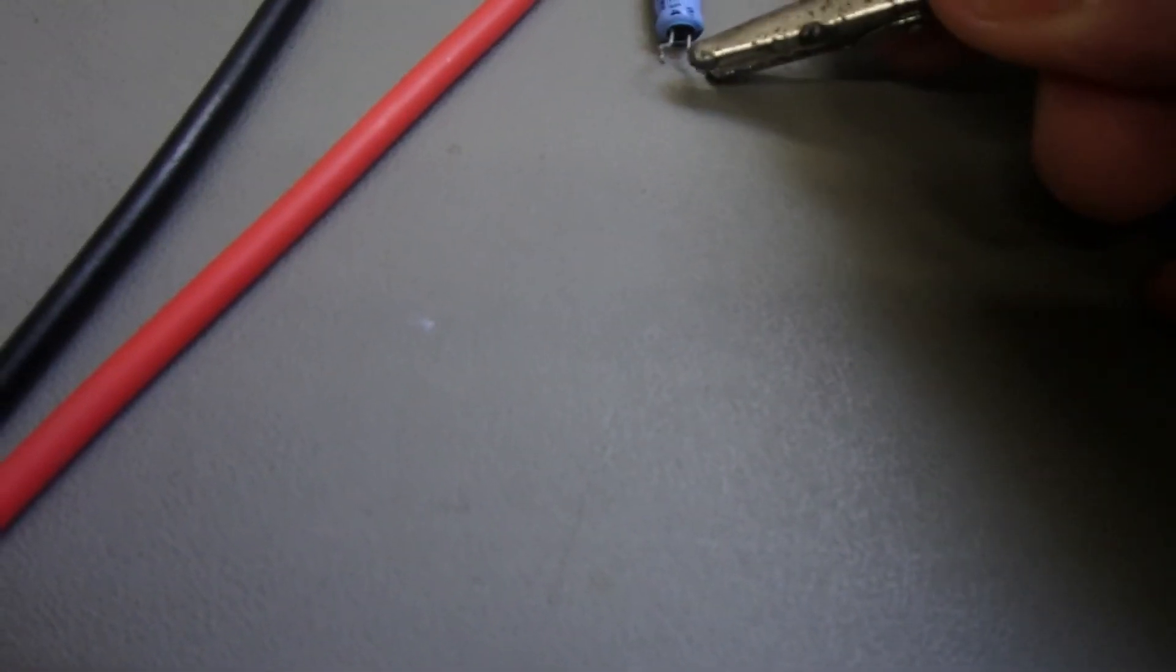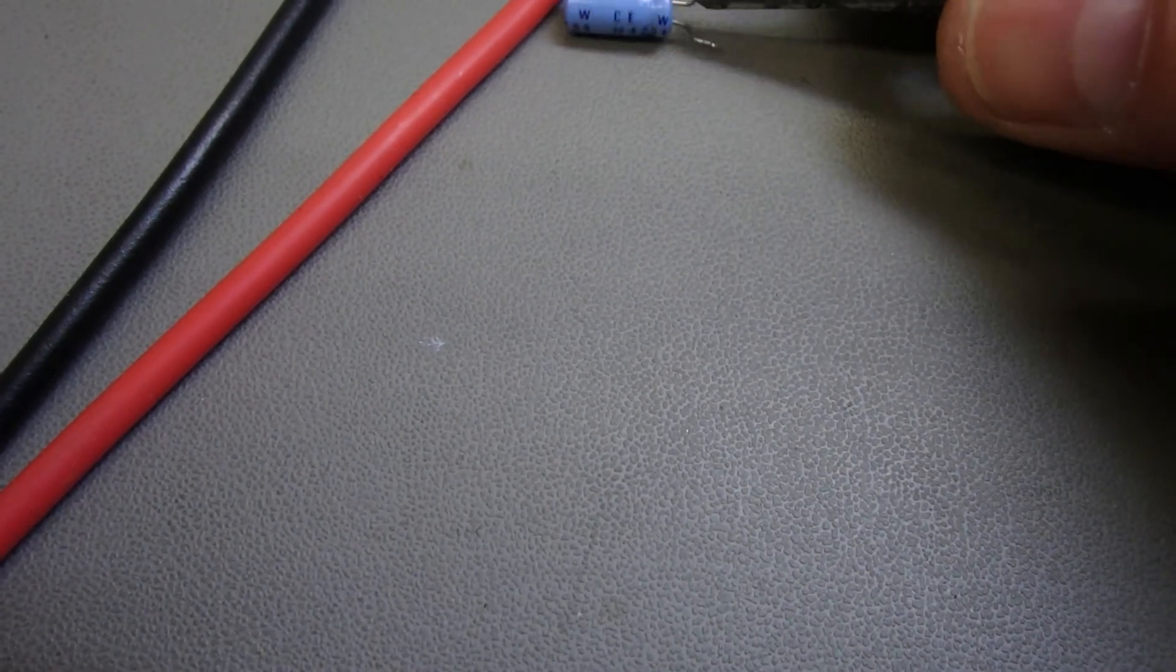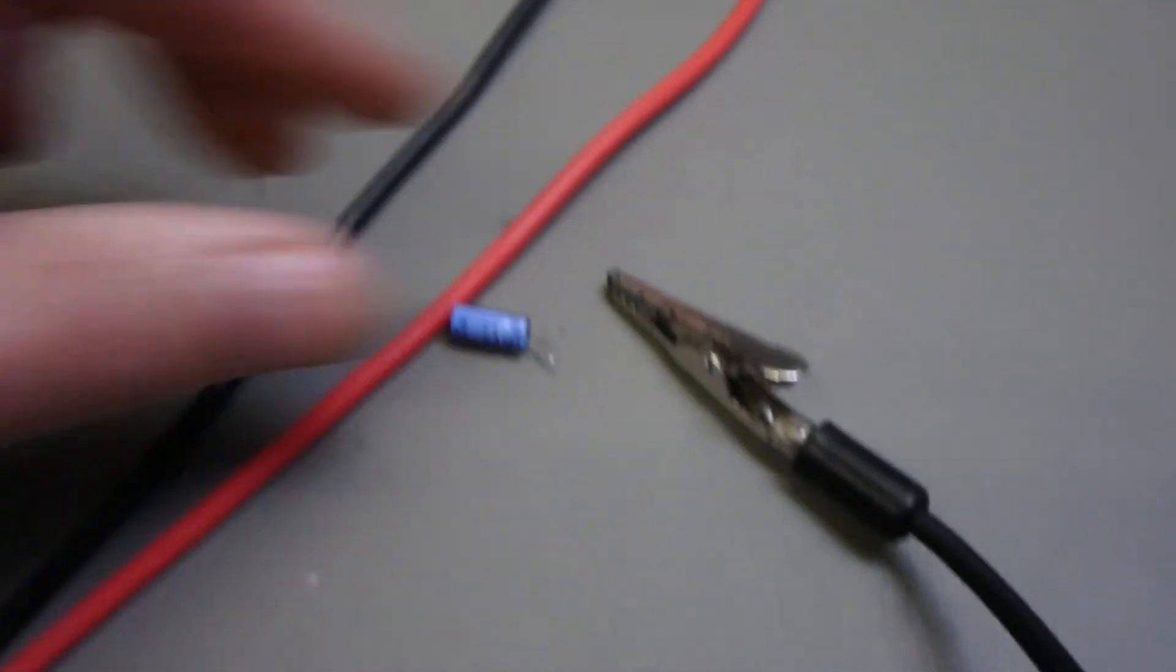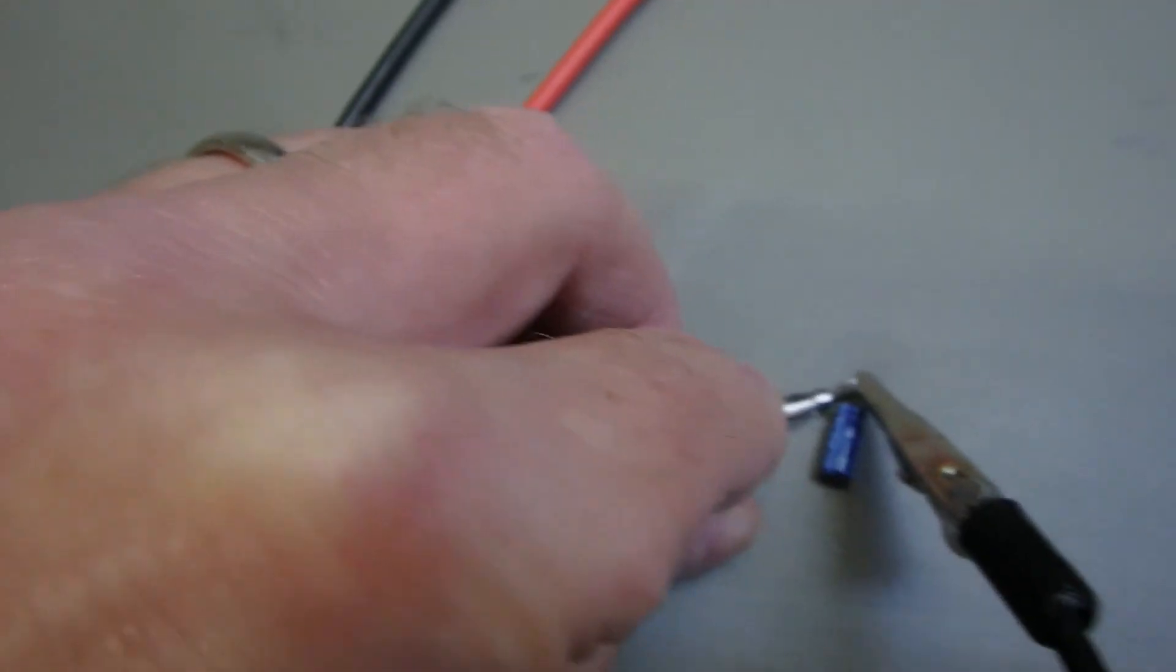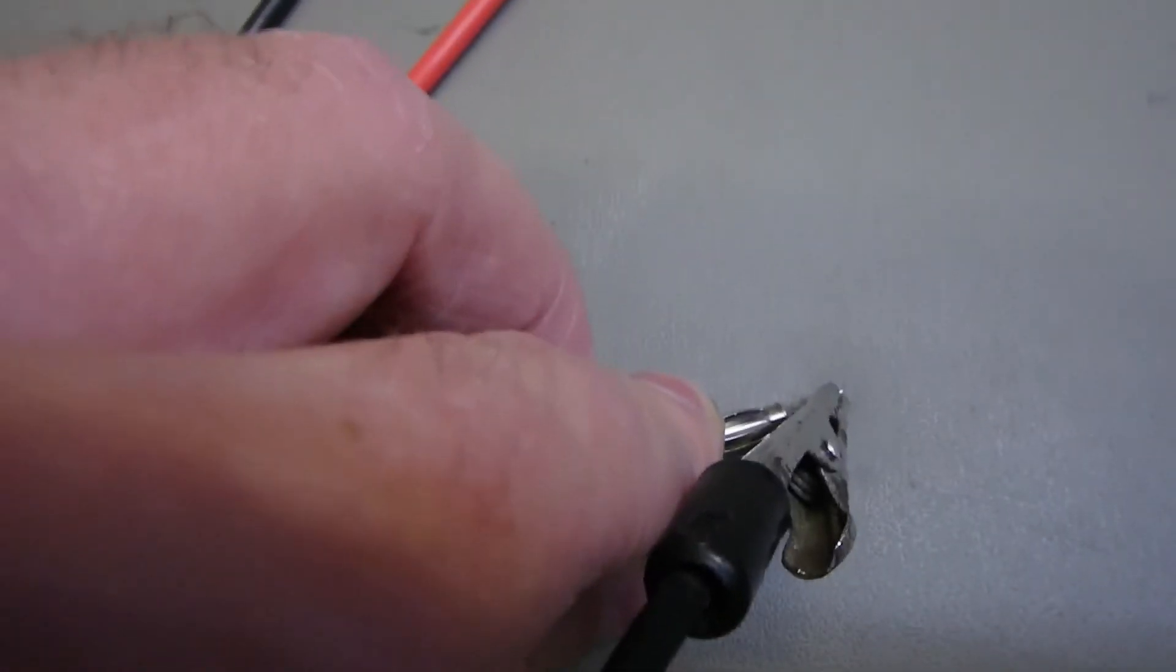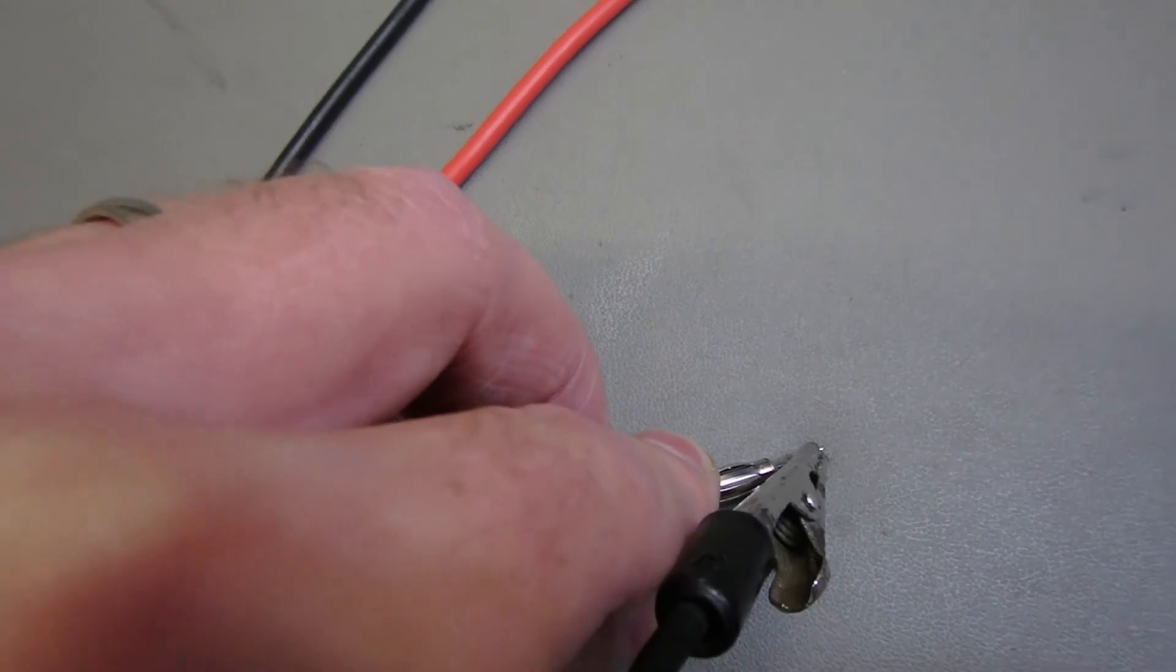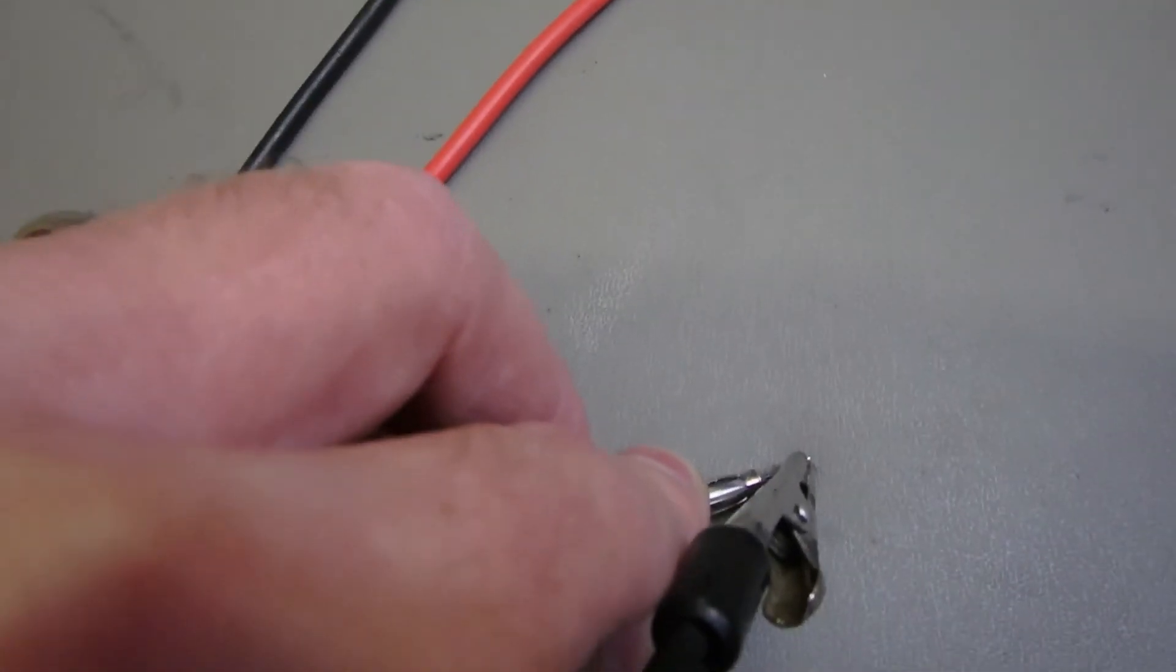Take that over, pull that out. Stick the meter on ohms. Let's have a look at this capacitor. I'm trying to do this one handed, operate the camera. Here we are on ohms and it is reading 1.2 ohms. Most unusual for an electrolytic capacitor. They rarely go short circuit or very low resistance. But this one certainly has.